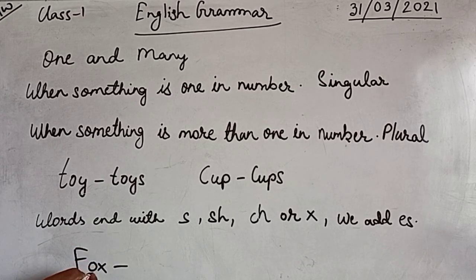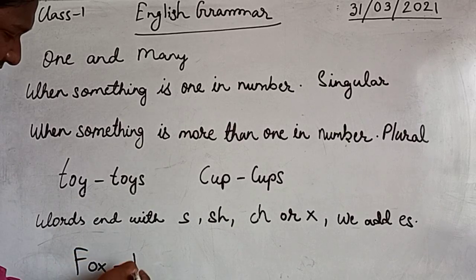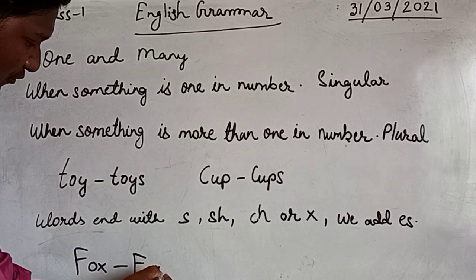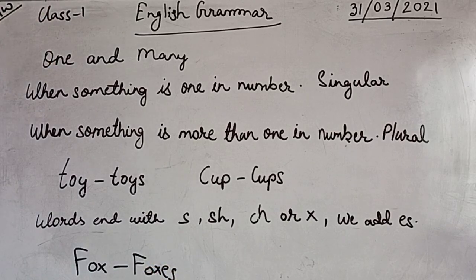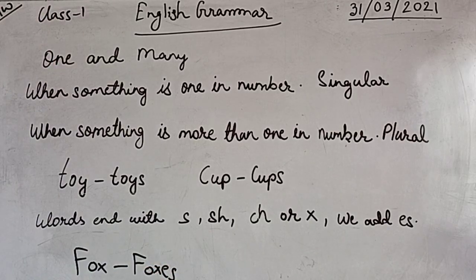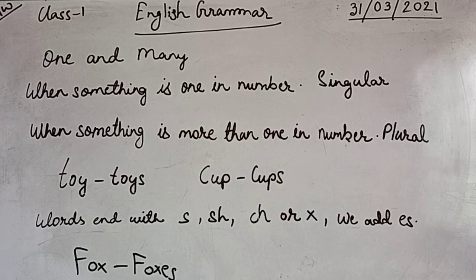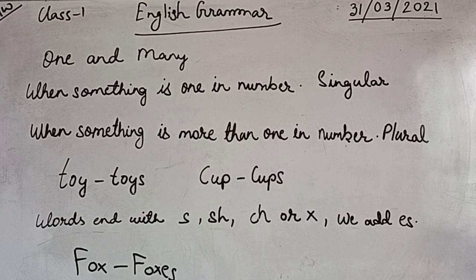Fox - see the ending is with 'x', so we make it plural by adding 'es': F-O-X-E-S, foxes. Got it? In this way we can make it plural. I want you to read this and understand one and many. Thank you.